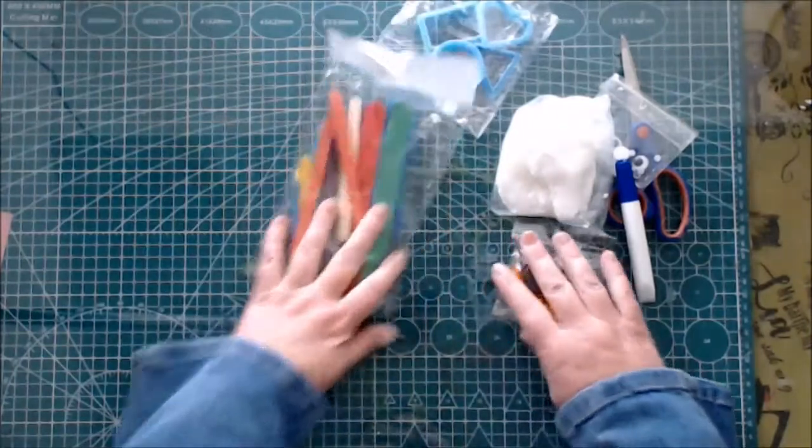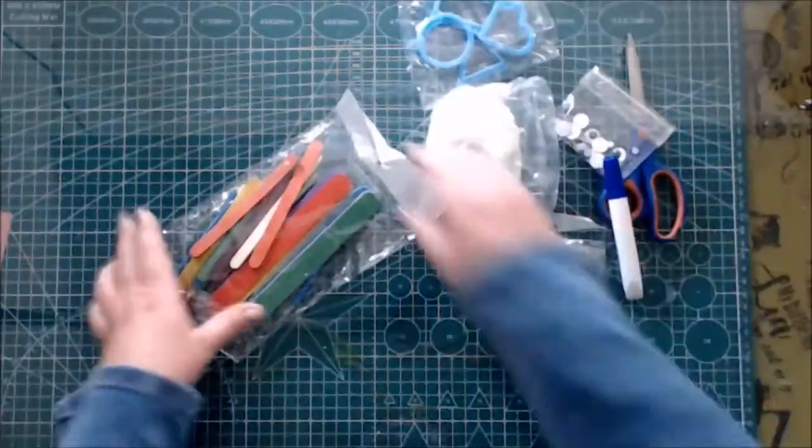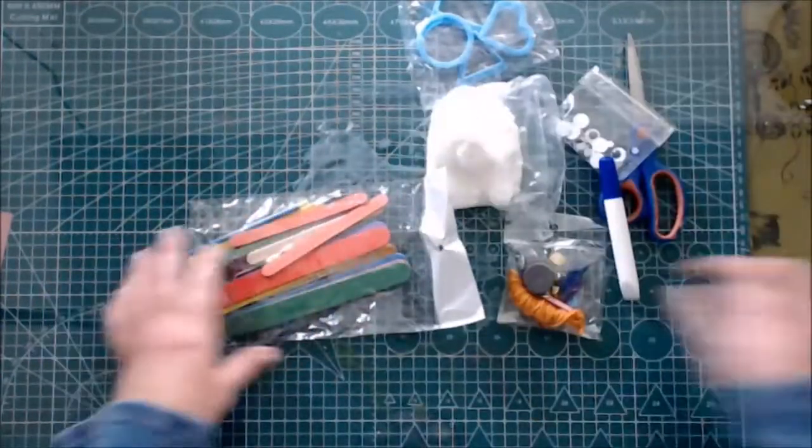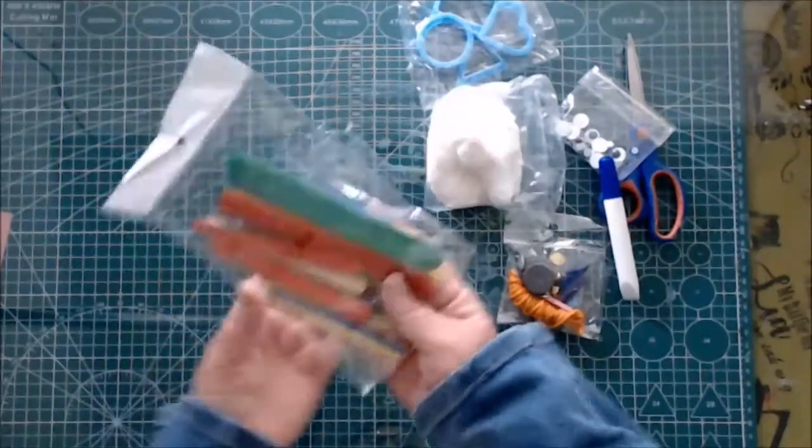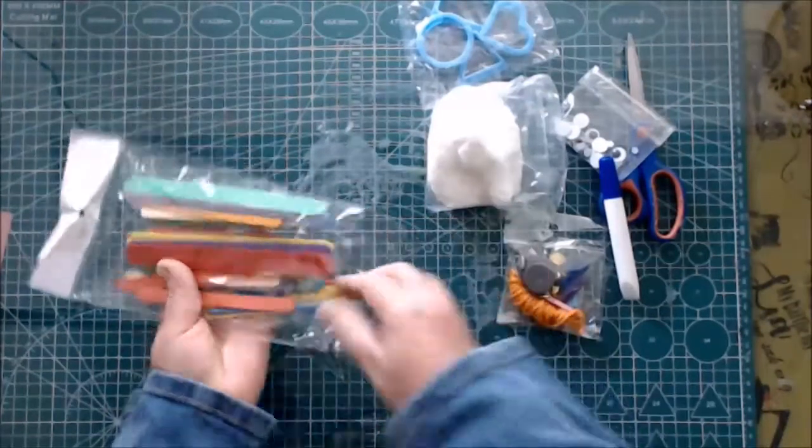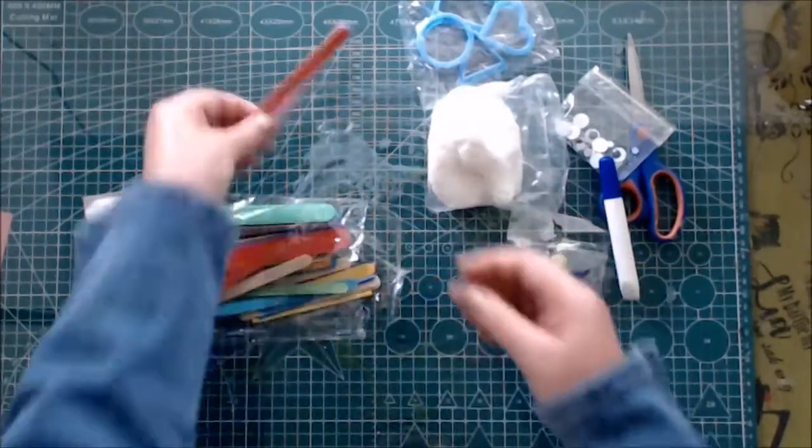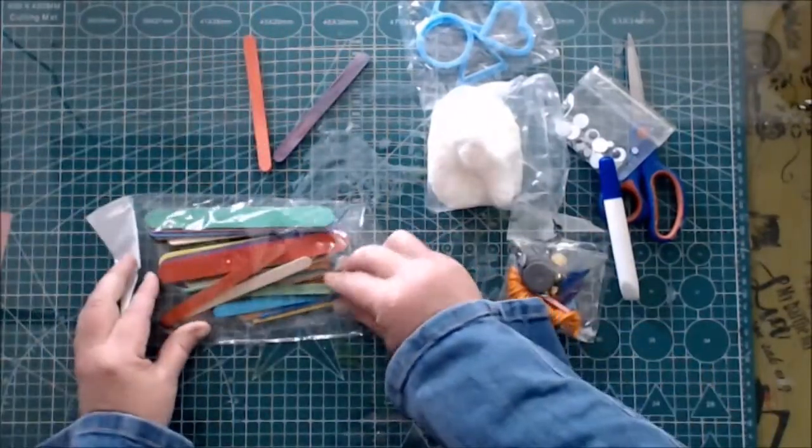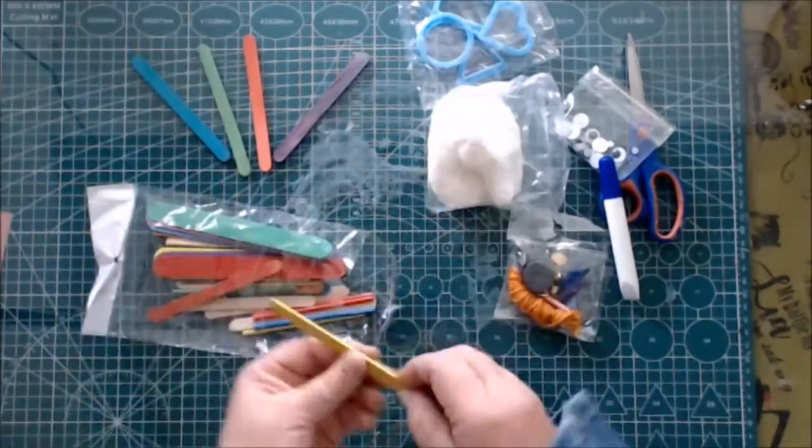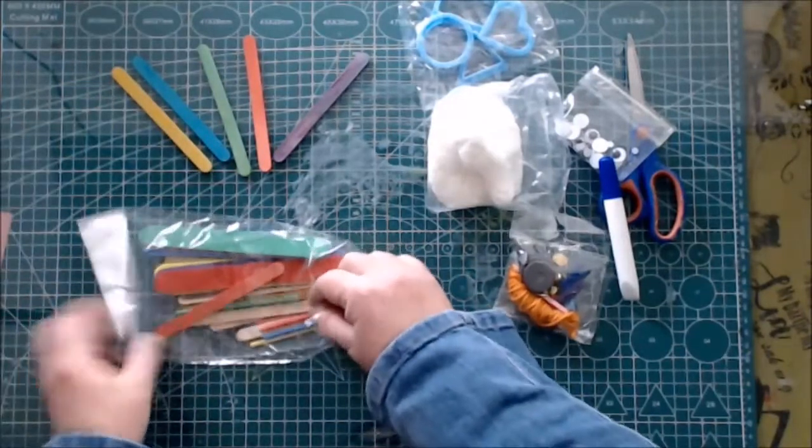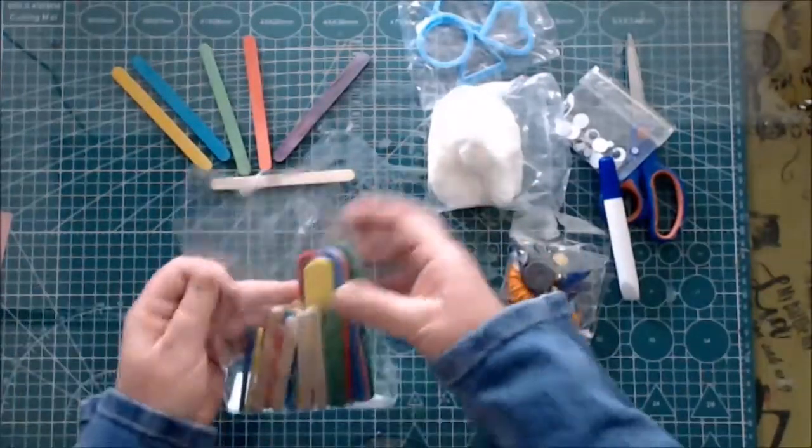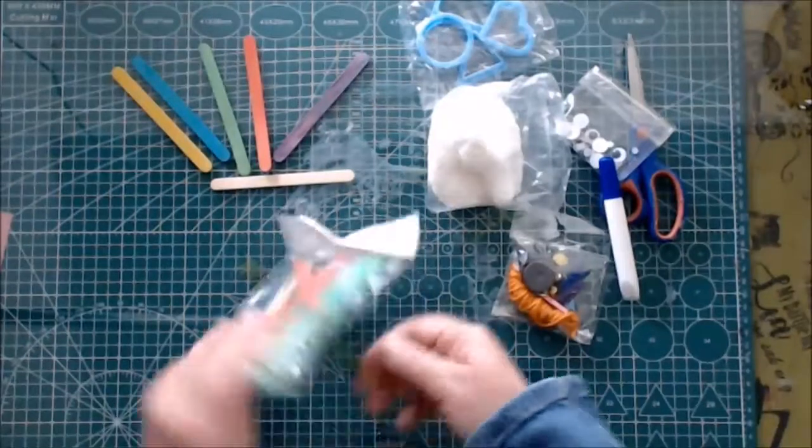With our popsicle sticks we are going to make a rainbow, so we are going to take rainbow colors out of the packet. Open your packet carefully so that all the sticks don't fall out. I'm going to take out a purple one, a red stick, a green one, a blue one, and a yellow one. We also need a neutral color one that we are going to use to construct all these popsicle sticks together.